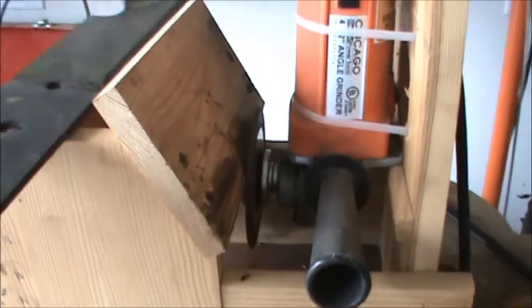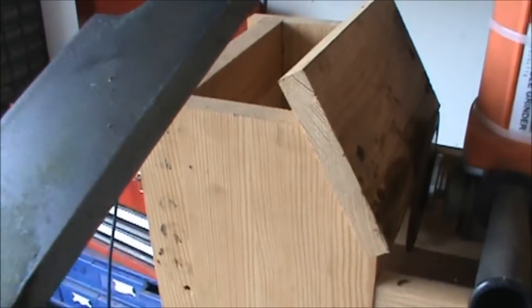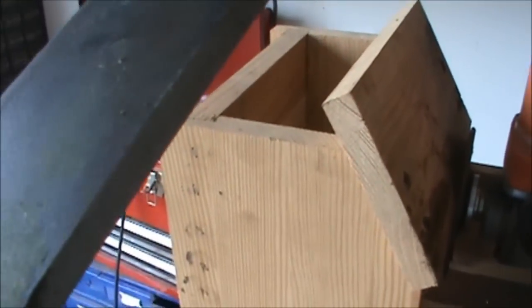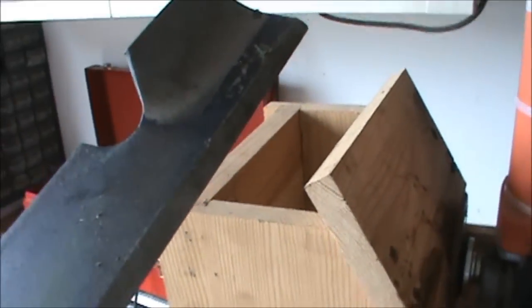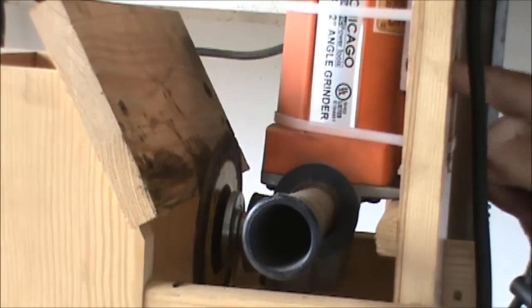First of all we'll take a look at the blade that we're going to be sharpening. I know it's hard to see. It's not too dull but it is dull. So we'll put a nice sharp shiny edge on there. Alrighty. So here we go. We're going to take our blade and sharpen it up.